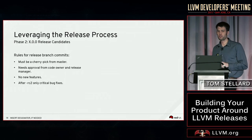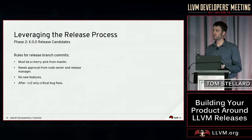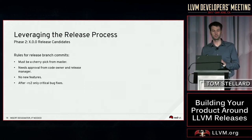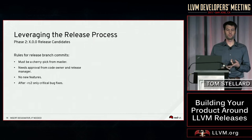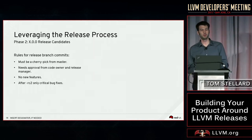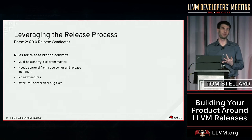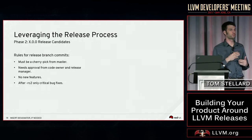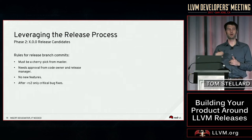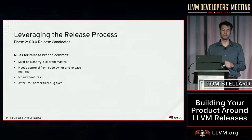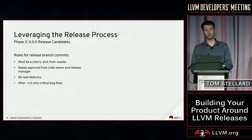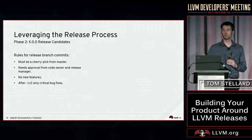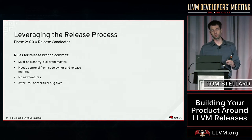Moving on to phase two: once we enter the release candidate phase, we clamp down on which commits can go in. It's the same requirements as before — cherry pick from master, needs approval — but no more new features, and especially after RC2, really only critical bug fixes. It's really important to have very strict guidelines for when you're going to stop accepting certain kinds of bugs; otherwise you can get into an endless release cycle. We try to be strict to cut down on the number of release candidates.